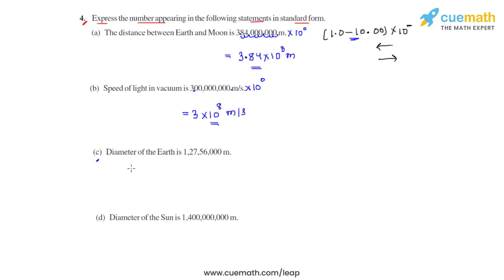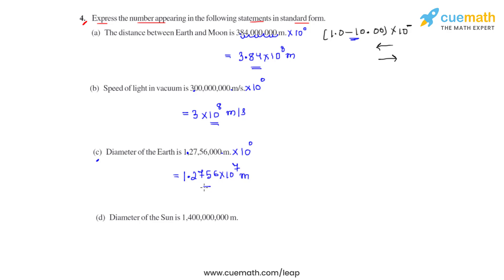In part C, we have been given the diameter of Earth, which is this large number. We again keep the decimal after the last digit, which is 0, and multiply the number by 10 raised to 0. The decimal has to be placed between 1 and 2. Moving the decimal towards left by 7 places gives us 1.2756 × 10⁷ meters, which is the standard form of the diameter of Earth.